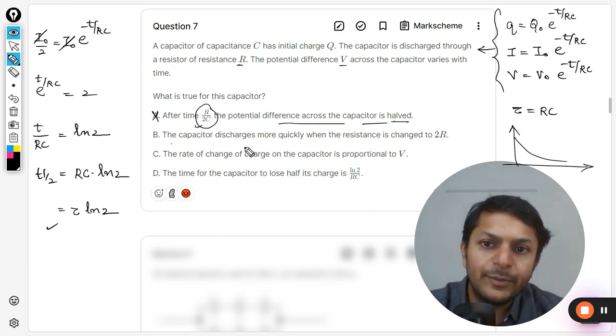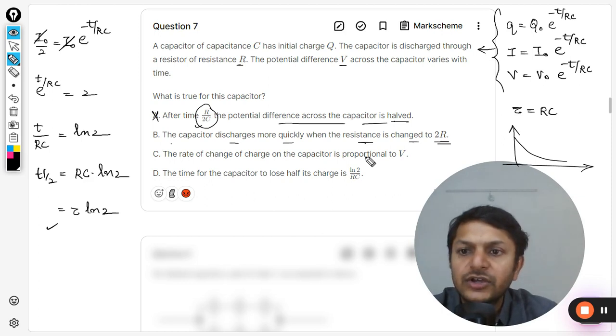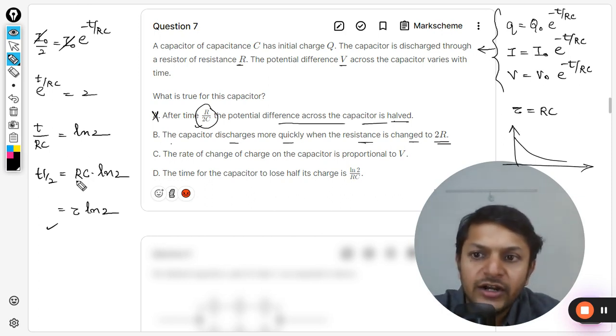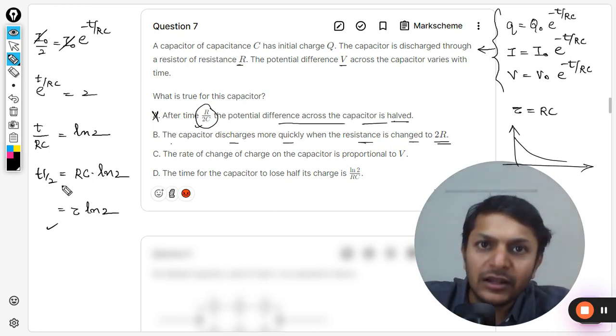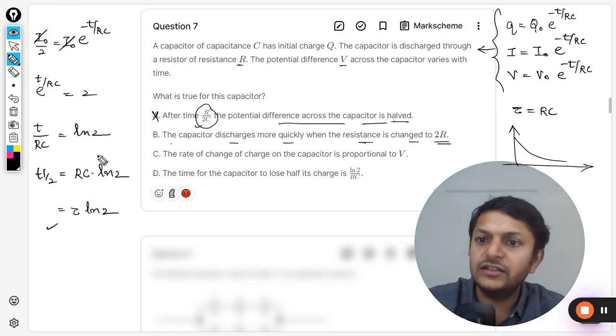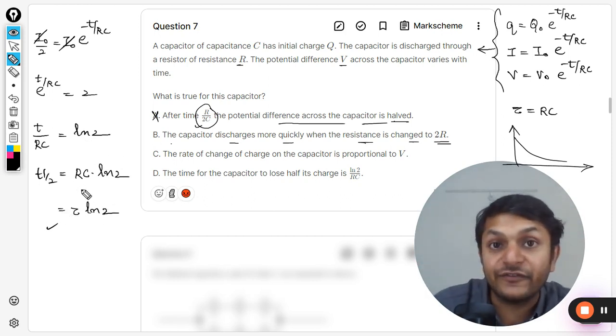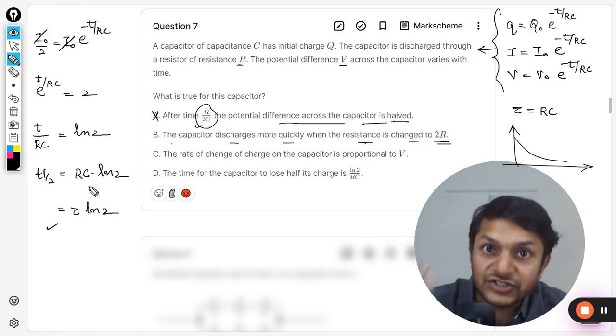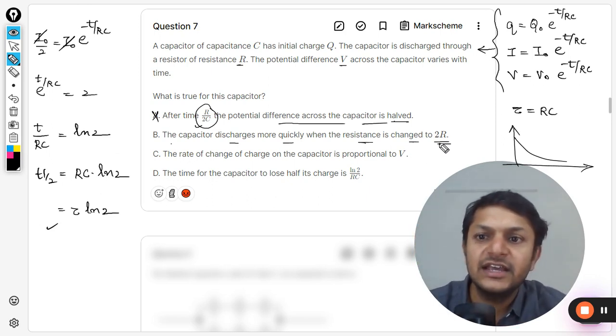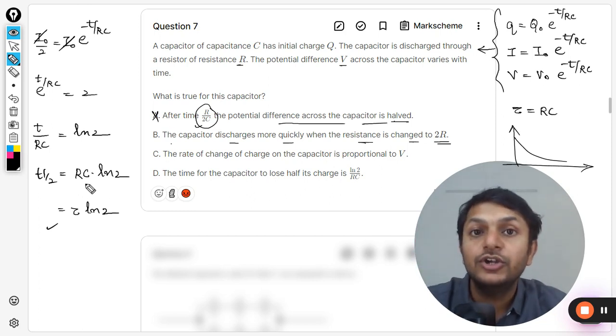The capacitor discharges more quickly when the resistance is changed to 2R. So if the resistance is changed to 2R, so the half-life is becoming double. Clearly the formula is in front of you. So it is not getting discharged at a faster pace. It means it is discharging at a lower pace if you are increasing the resistance. It is taking double the time to become half, so even B is wrong.